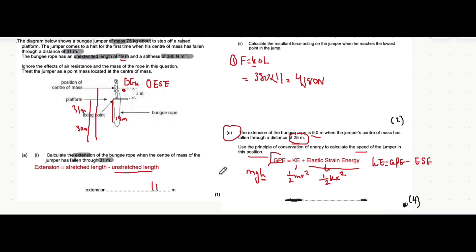Like it mentions here, the person falls through a distance of 25 meters, meaning that the extension would be six meters. Sorry, five meters, because we have to take into account of this one meter here. So if they fall one meter and then they fall another 24 meters, 24 take away the unstretched length of 19 is five. So that means that the extension is five meters.